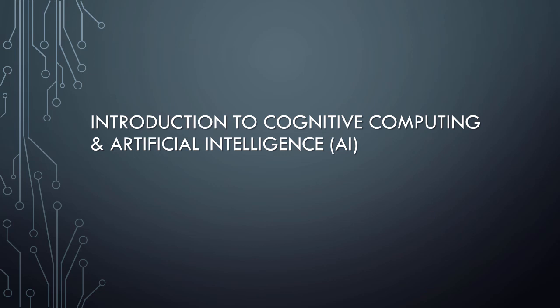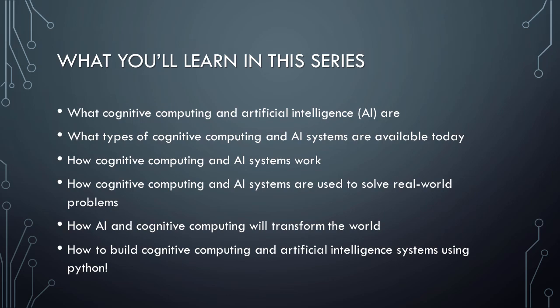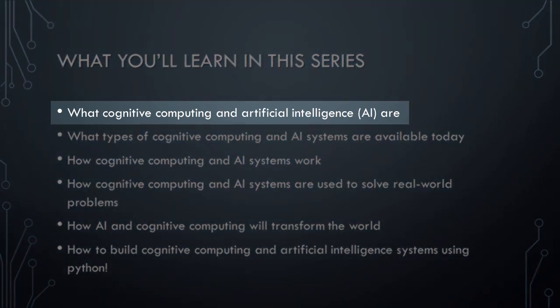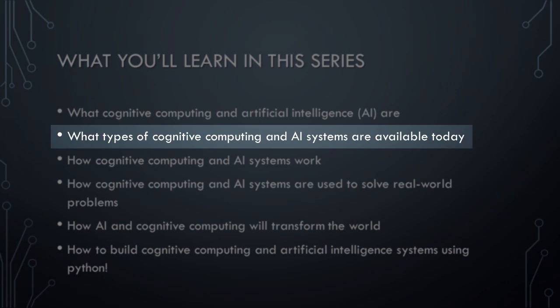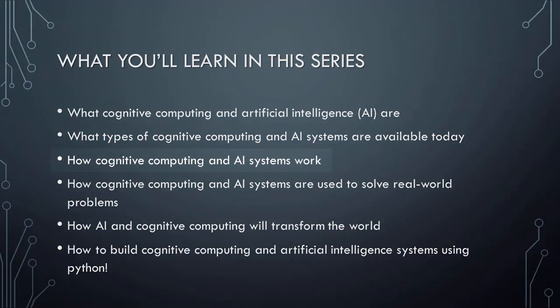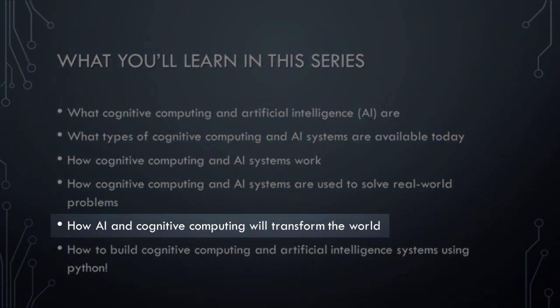Most of us have seen artificial intelligence portrayed in science fiction books or in big-budget Hollywood movies, but this series of videos will focus on truth rather than fiction. Along our journey, we'll learn about what cognitive computing and artificial intelligence are, the various types of cognitive computing and AI systems that are available today, how those systems work, how they are used to solve real-world problems, and the ways in which AI and cognitive computing will transform almost everything we do.